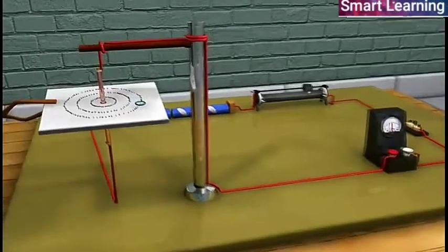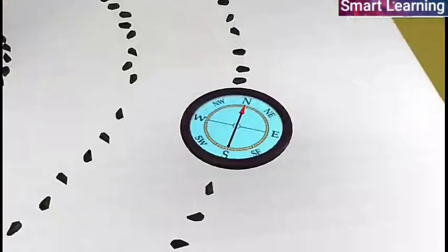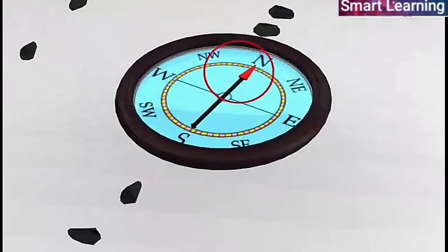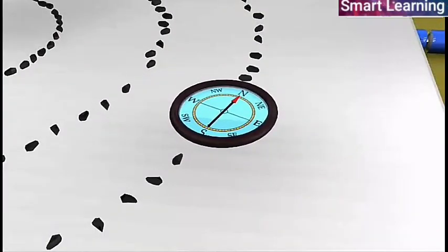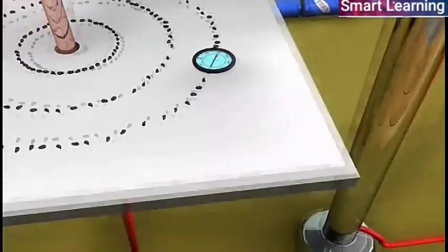Now place the compass needle at any point over the circles and observe the direction of the needle. The direction of the north pole of the compass needle would give the direction of the field lines produced by the electric current through the straight wire.